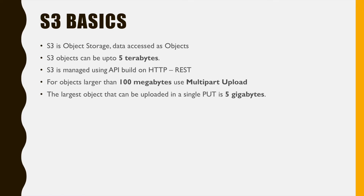In S3, one single object cannot be more than 5 terabytes — this is huge for one object. S3 objects are managed using an API built on top of HTTP REST. For example, HTTP DELETE to delete an object, GET to retrieve, and POST or PUT to store an object.